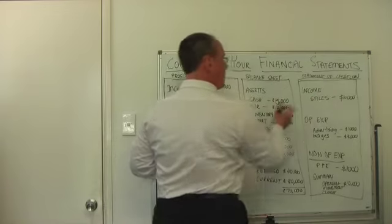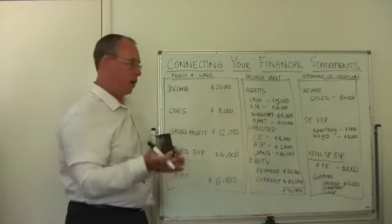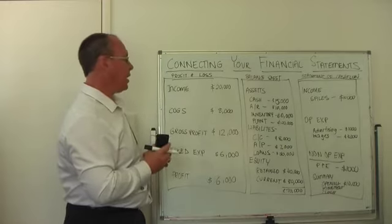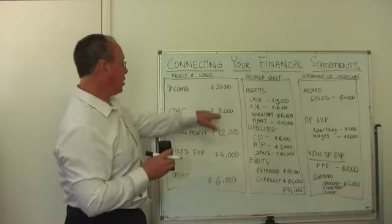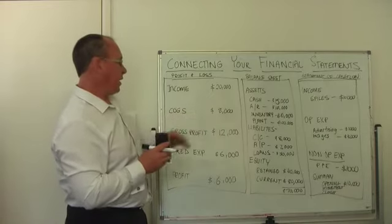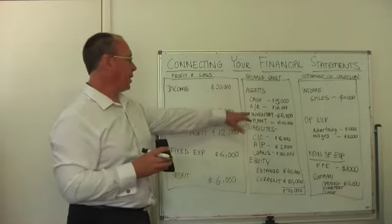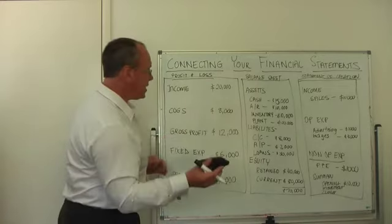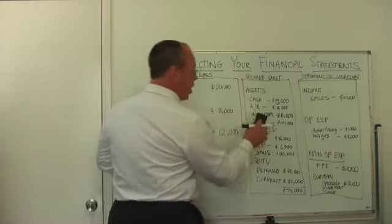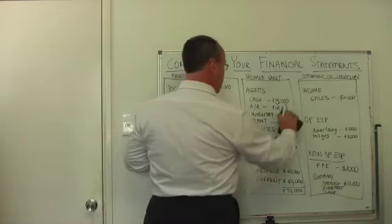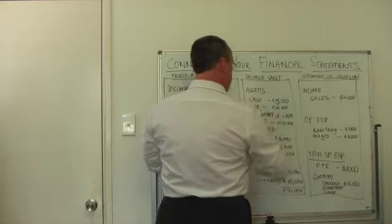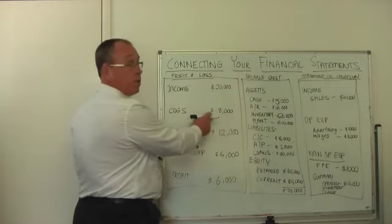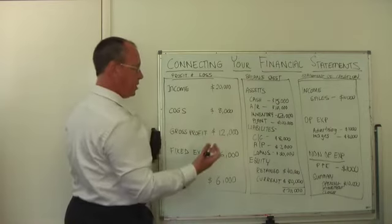And it turned up on our statement of cash flow for when it actually flowed. Let's look at inventory. We've recorded a cost of goods of $8,000 and we've got inventory of $10,000. What would happen in that instance is, at the end of the month, if we didn't buy any more inventory, our inventory level would go down to $2,000 as $8,000 went into the cost of goods to manufacture this particular thing.